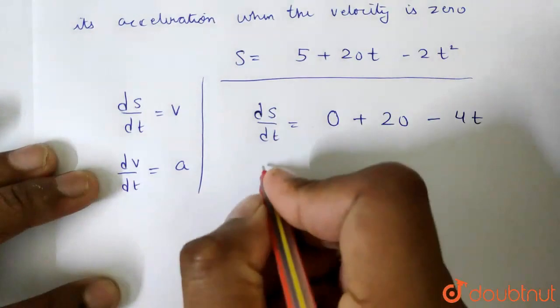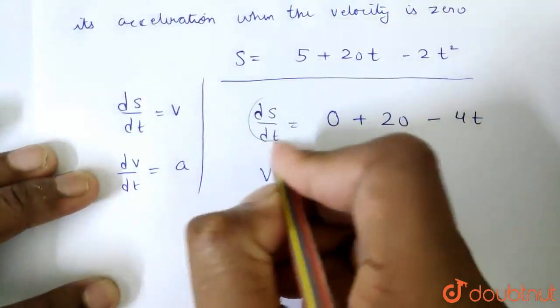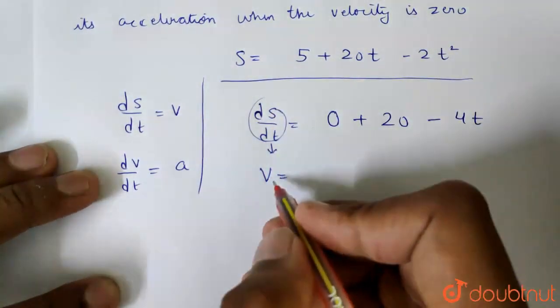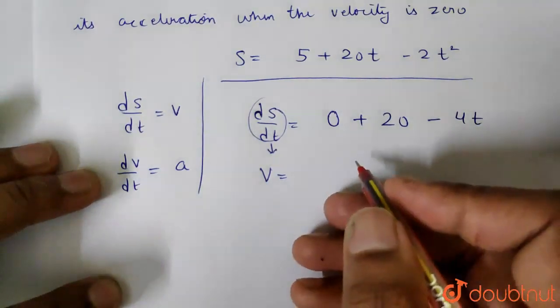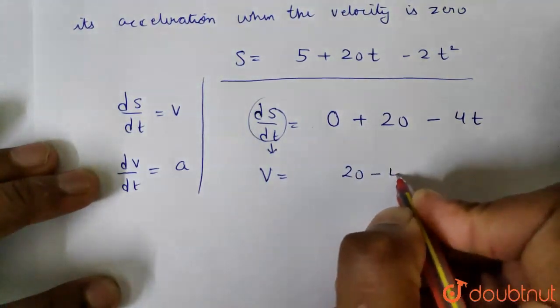So the velocity is coming. What is velocity? ds/dt is velocity. So v = 20 - 4t.